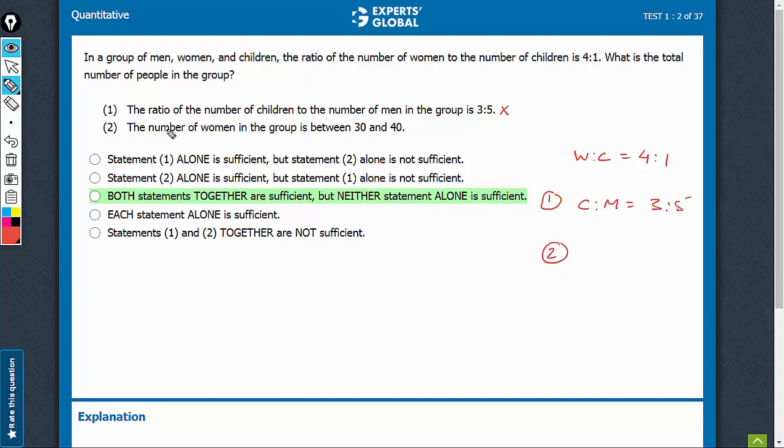Looking at 2 alone, 2 talks about women being in between 30 and 40, but still looking at this and the main information given, nothing has been said about men, including these two. So, of course, this is also not going to be sufficient.